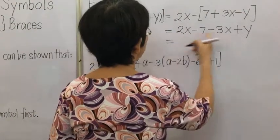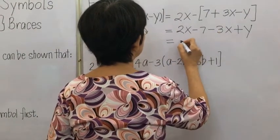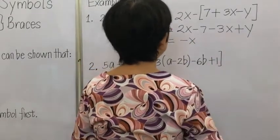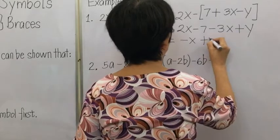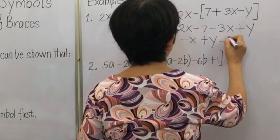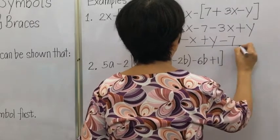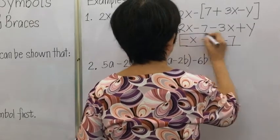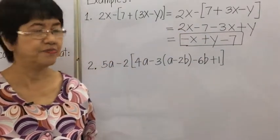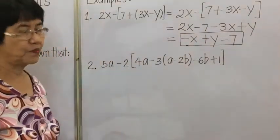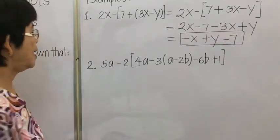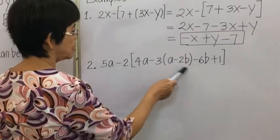Combining like terms: 2X minus 3X is negative X, and then plus Y, minus 7. That is the final answer for example 1. For example 2, we again have two grouping symbols, and the innermost grouping symbol is identified.